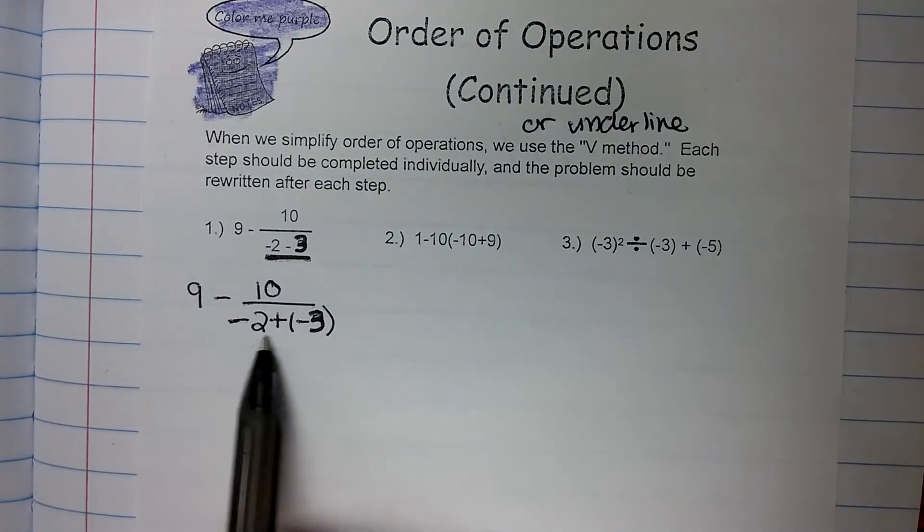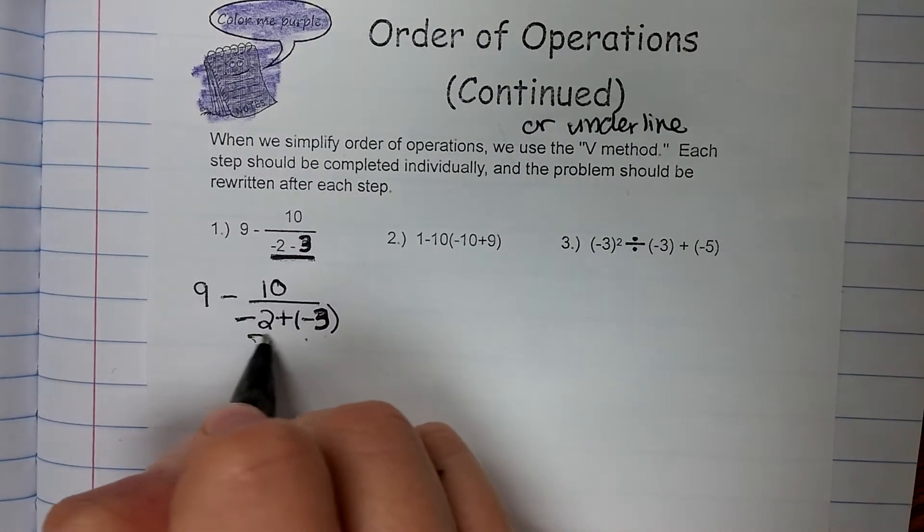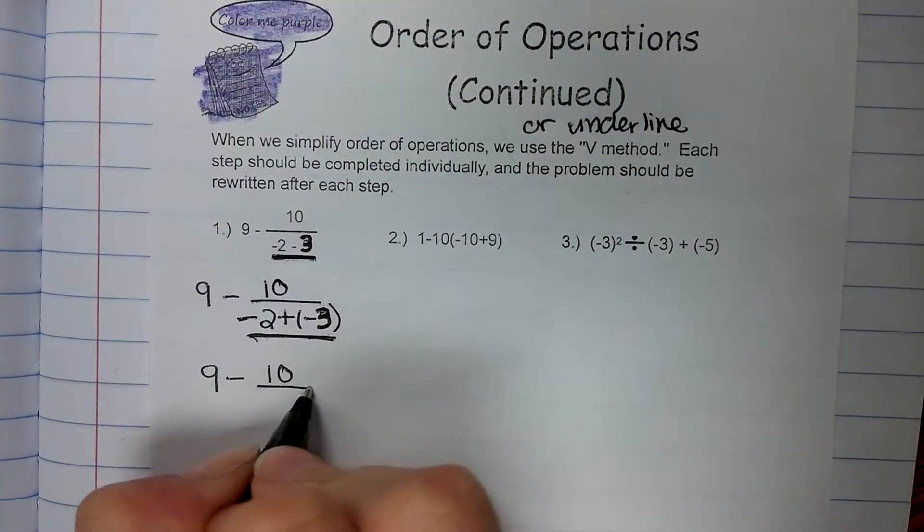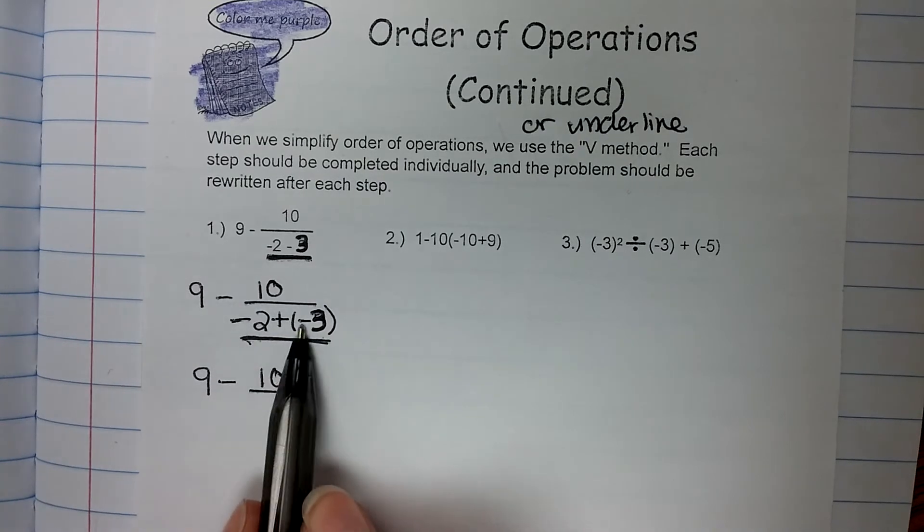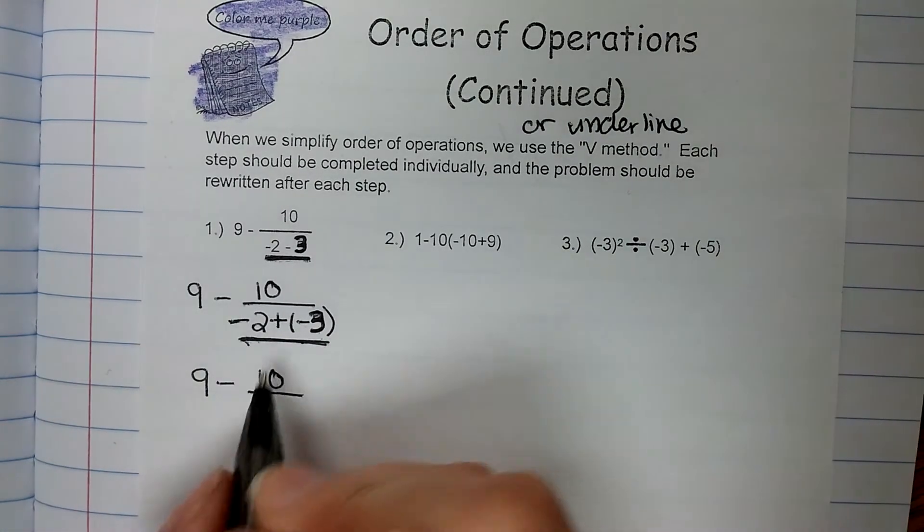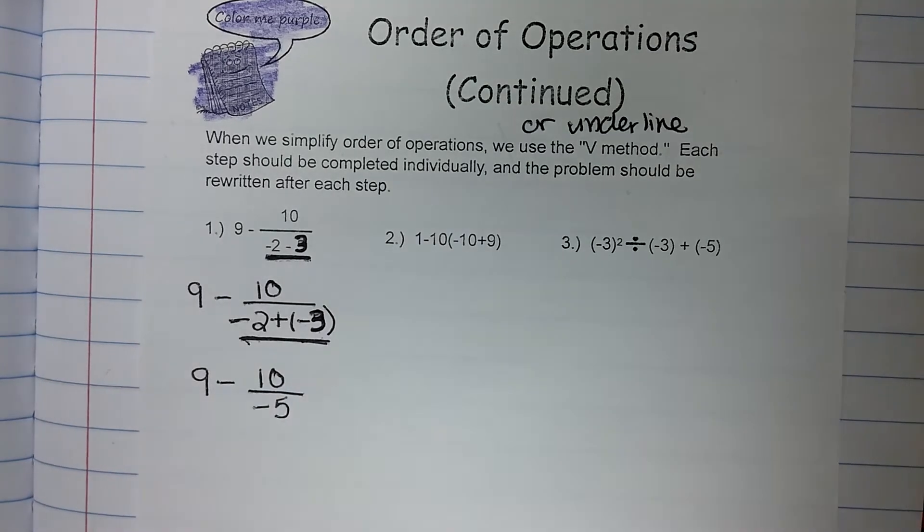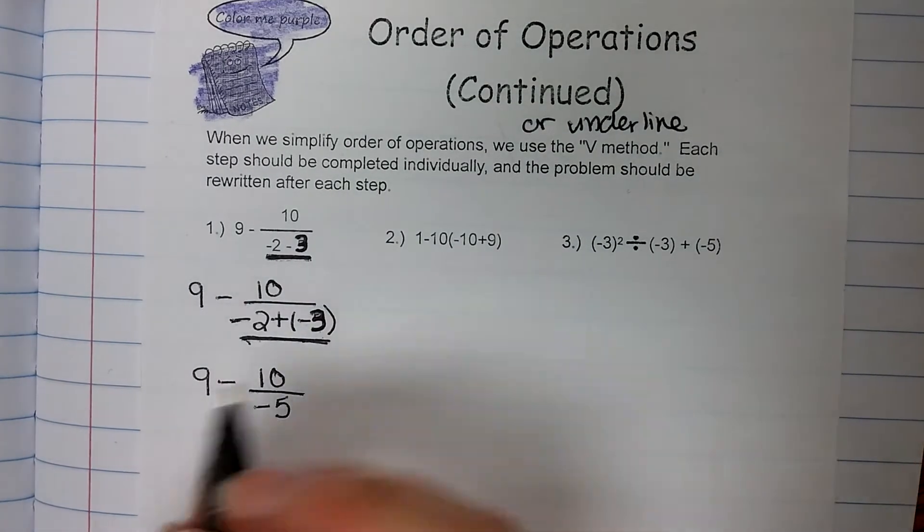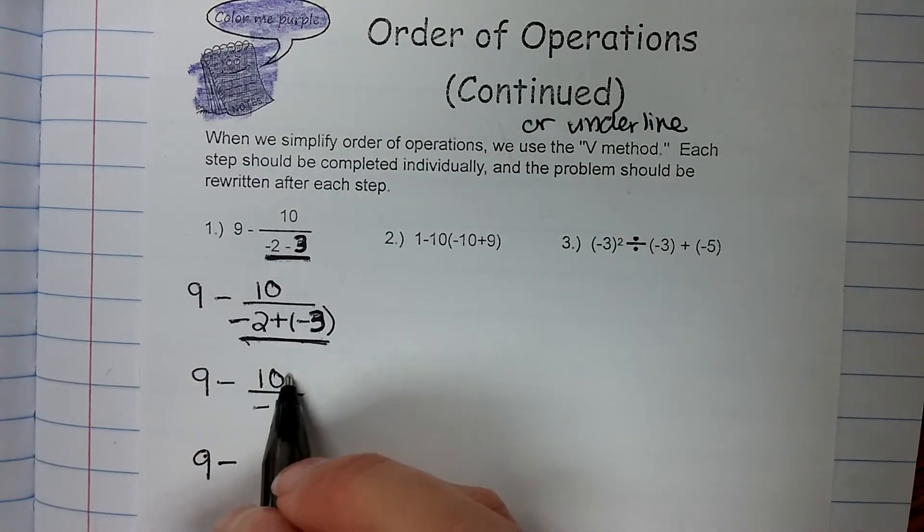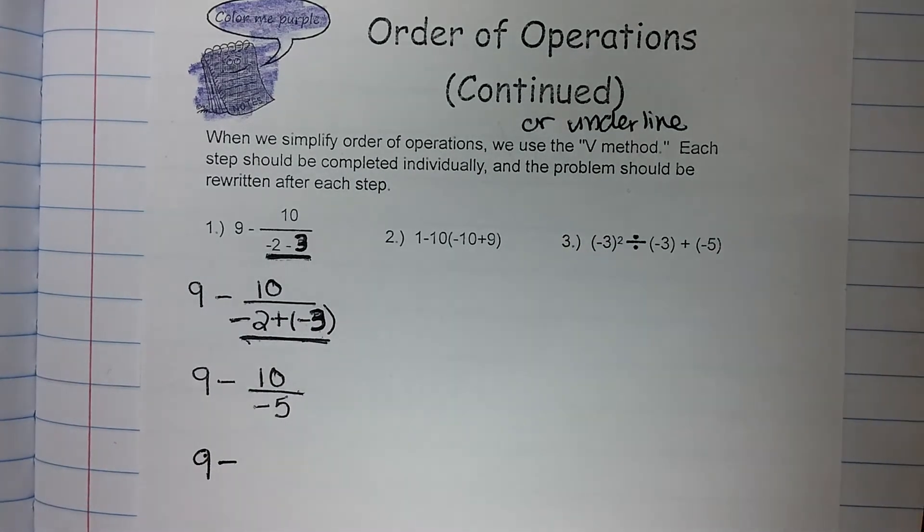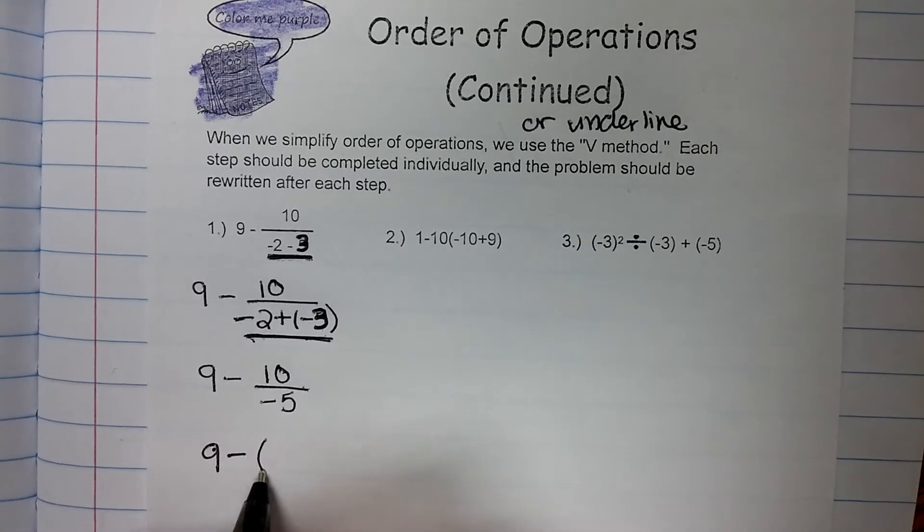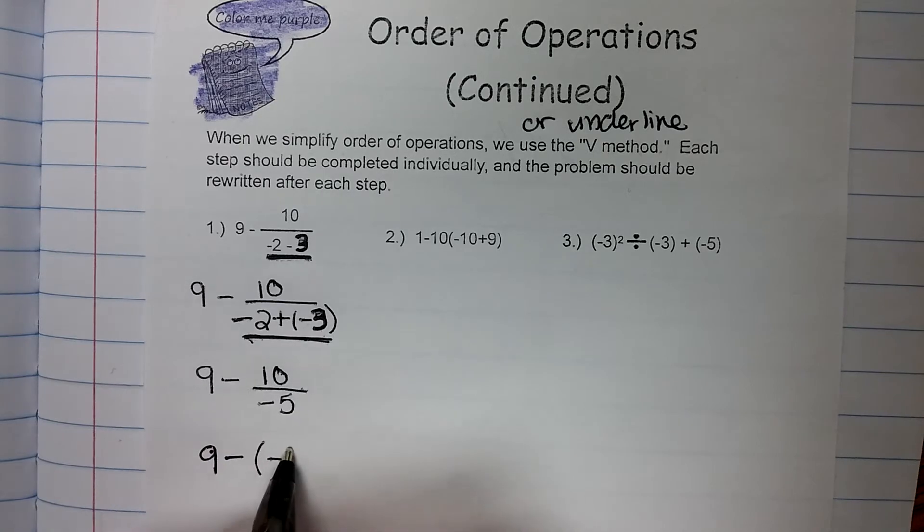All right, so then we have an addition problem now. So we need to work that addition problem right here. So that gives us 9 minus 10 over. My signs are the same, so I'm going to add 2 plus 3 is 5, and I keep the sign they share, so negative 5. My next step, 9 minus, I need to do the division. So I'm going to do the 10 divided by negative 5. 10 divided by negative 5, signs are opposite, so my answer is going to be negative. And 10 divided by 5 is 2.